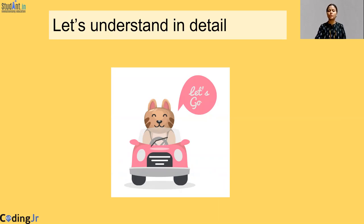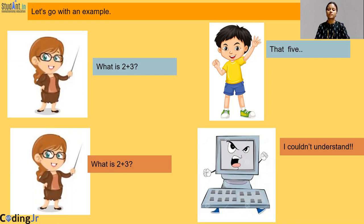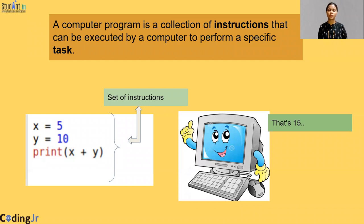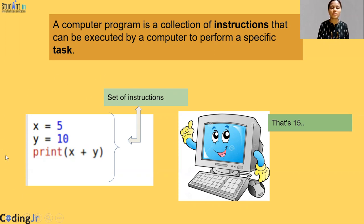When your teacher asks you a math problem like what is three plus two, you would immediately reply five. But what if the same teacher asks the same question to a computer? The computer would not understand. So we give instructions in the form of code to our computers, which are understood by the computer, and then the computer responds back to us. You can see an example here — we have given the value of x as five, y as ten, and then printed x plus y. These are the set of instructions given to the computer, telling it the values of x and y and asking it to print x plus y. So the computer knows the answer and will print 15.